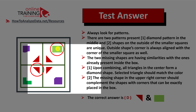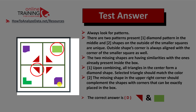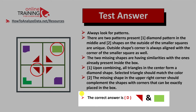For pattern two, the missing shape in the upper right corner should complement the shapes with corners that can be exactly placed in the box — in this case, a green rectangle. You also notice that there is a pattern of green color on the opposite side of the squares, the same as the purple colors on the opposite sides of other squares. So the correct answer here is choice D. Hopefully you've nailed this question and now know how to answer similar questions on the test.